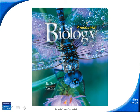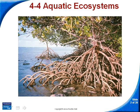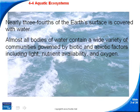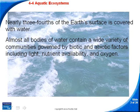This is the Chapter 4, Section 4 podcast on aquatic ecosystems. Right there you can see a mangrove, which we'll be talking about later on. Nearly three-fourths of the Earth's surface is covered with water, and almost all bodies of water have some type of life in them, with a very wide variety of communities shaped by different biotic and abiotic factors.